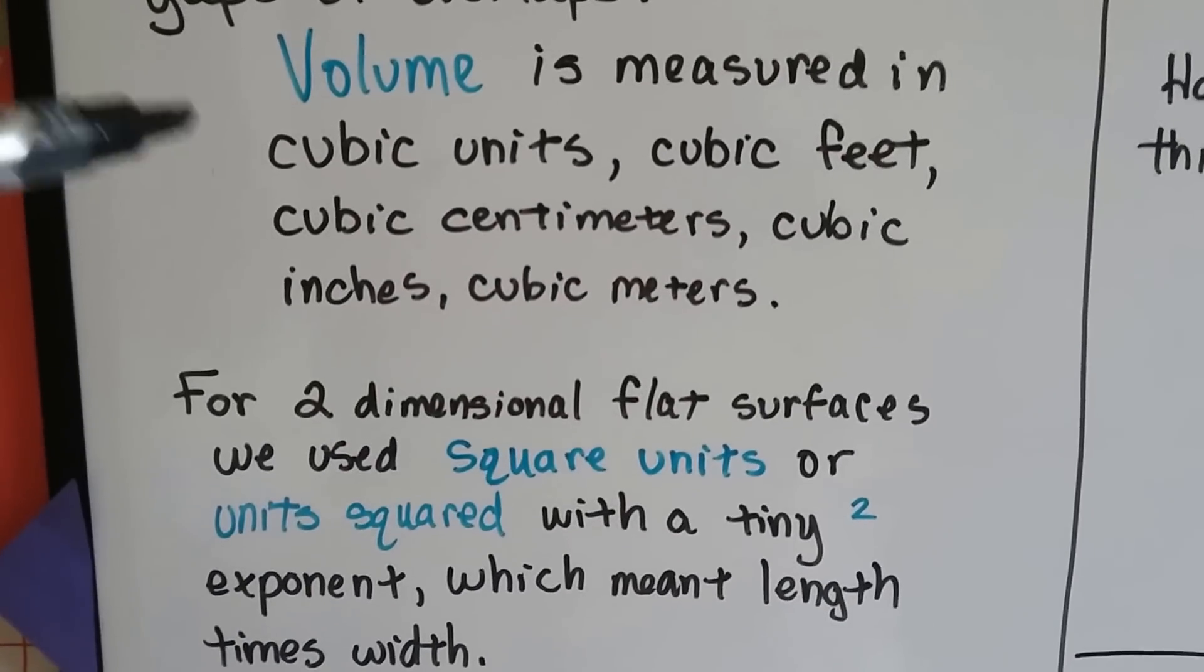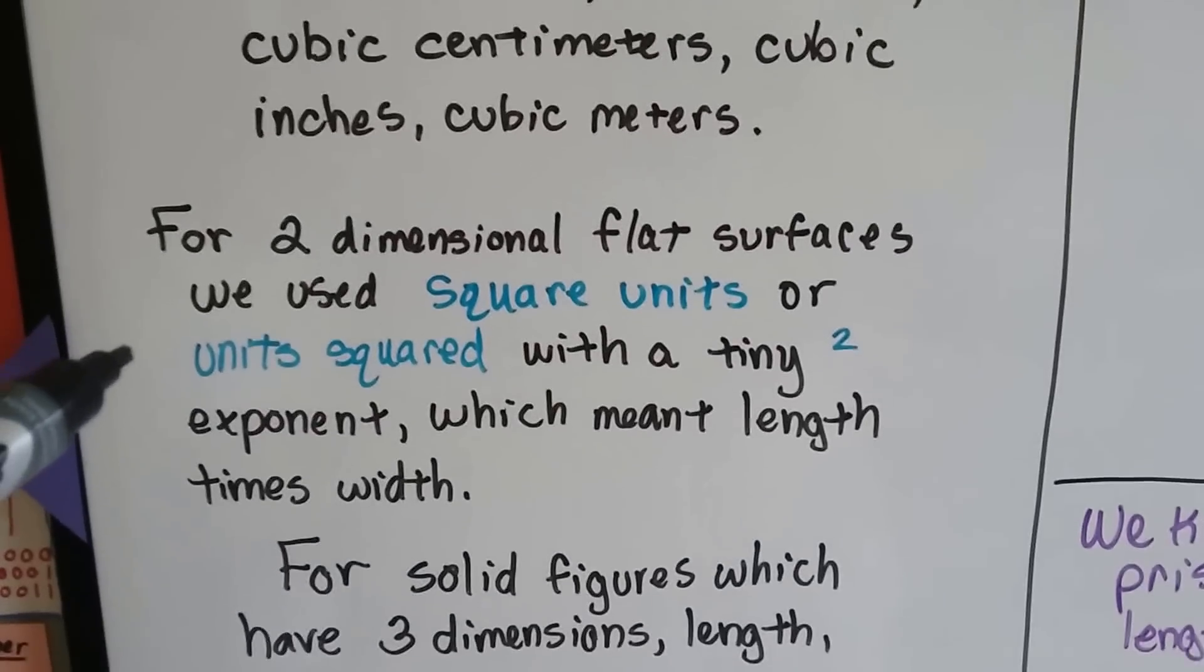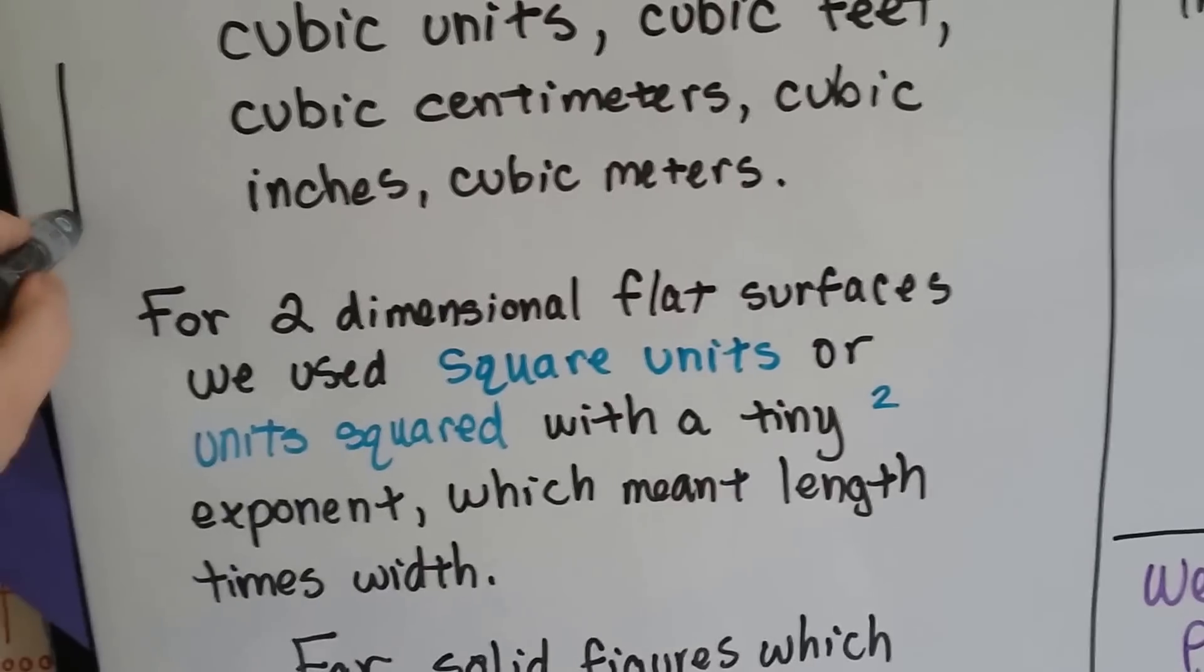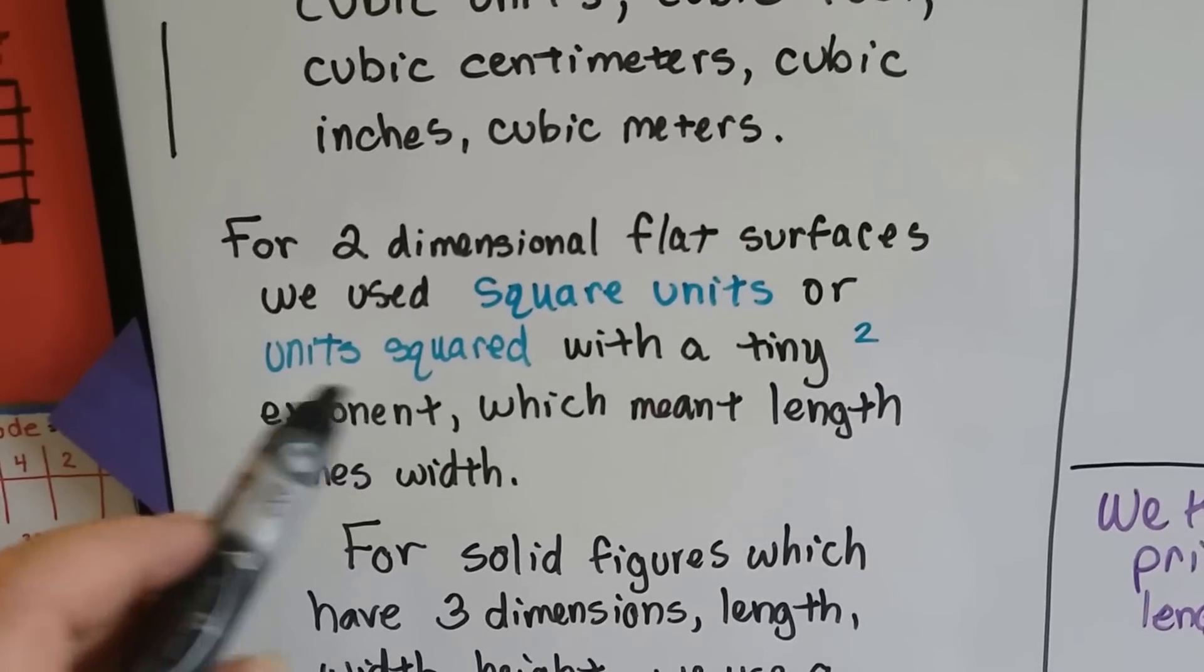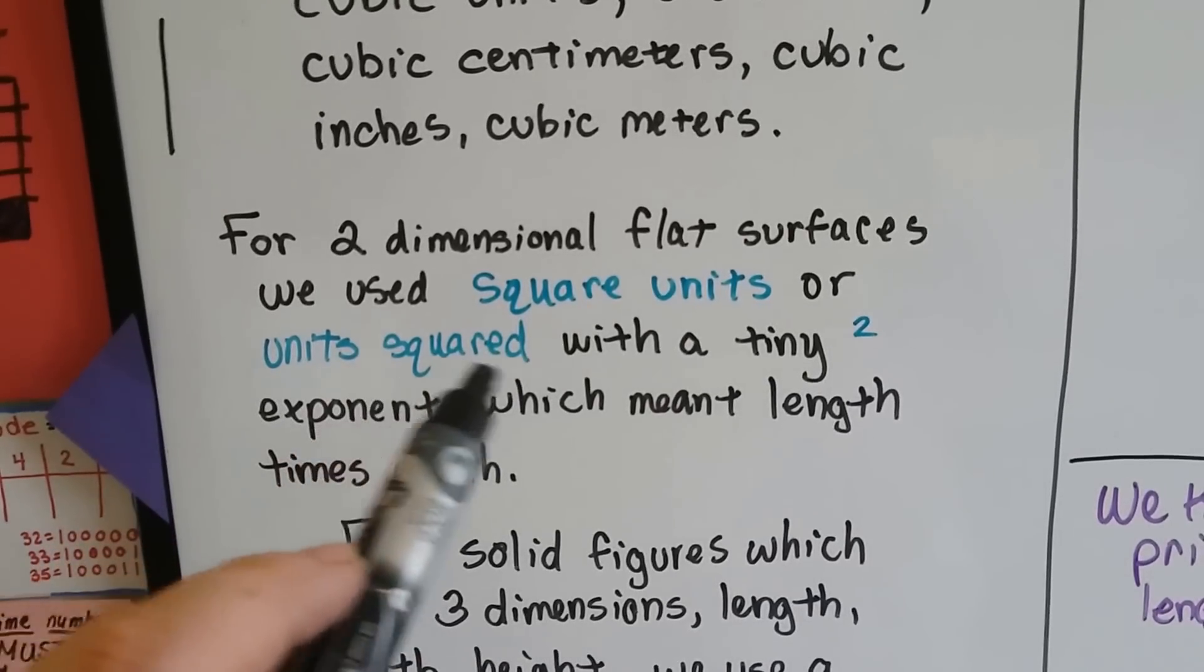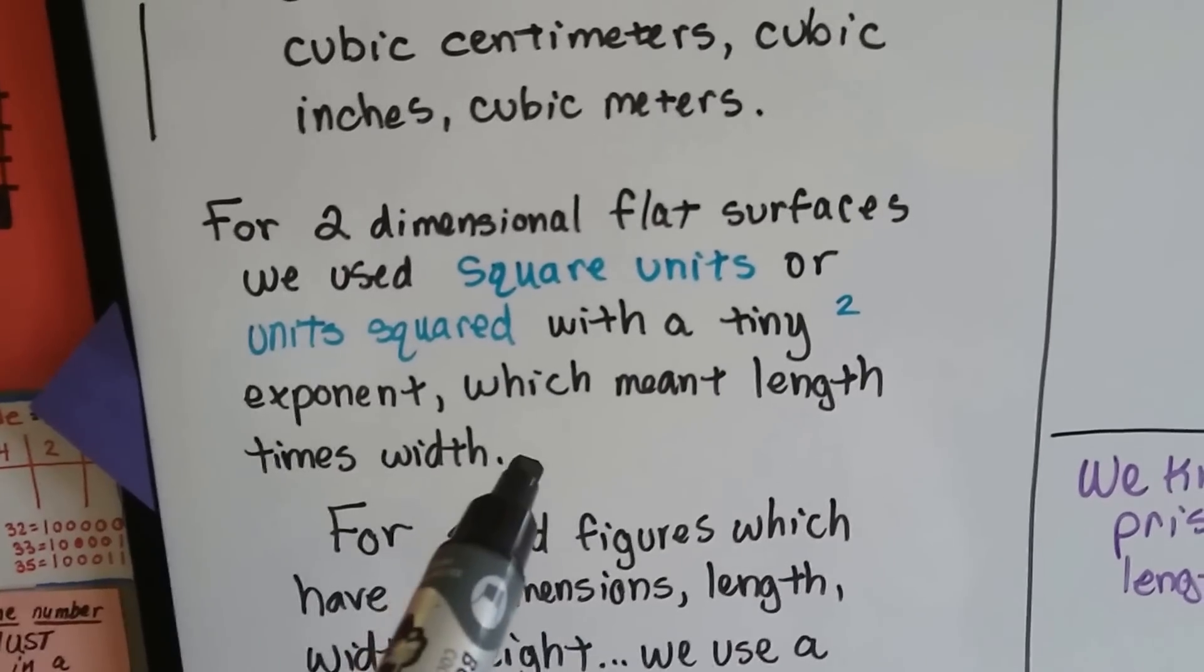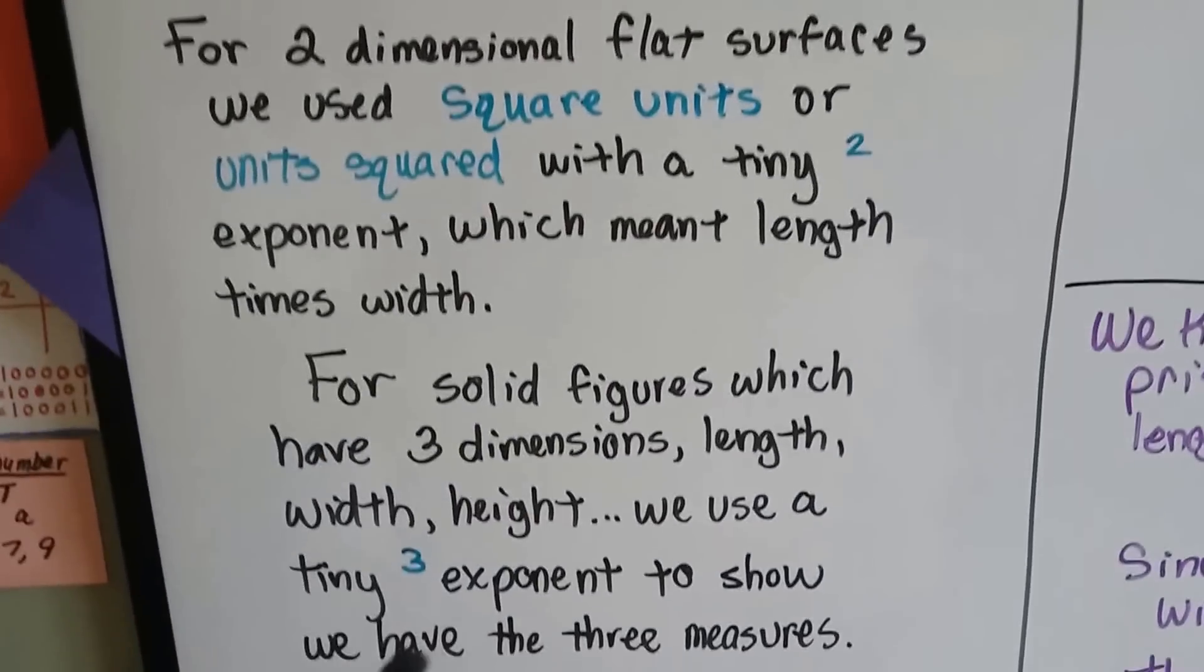For two-dimensional flat surfaces, we used square units or units squared with a tiny exponent of 2, which meant length times width. It represented the two measures: length and width.